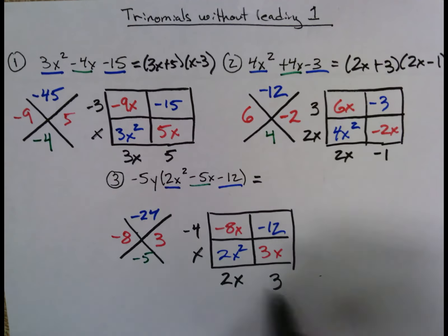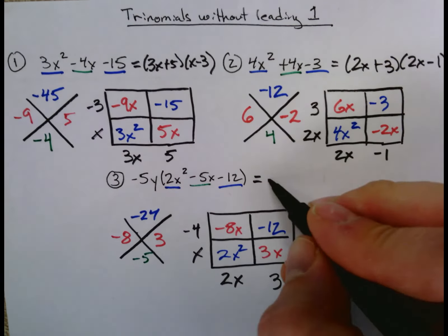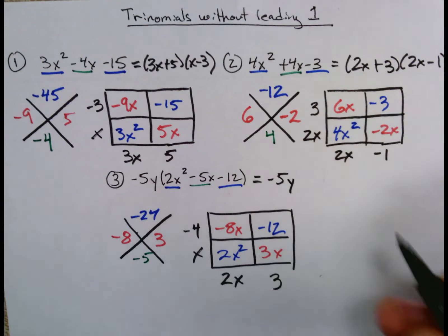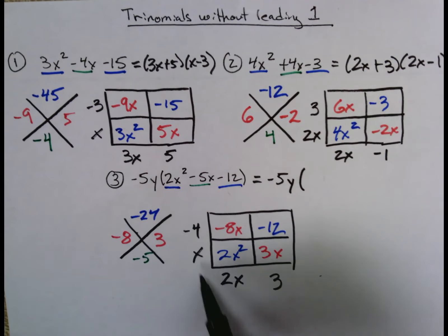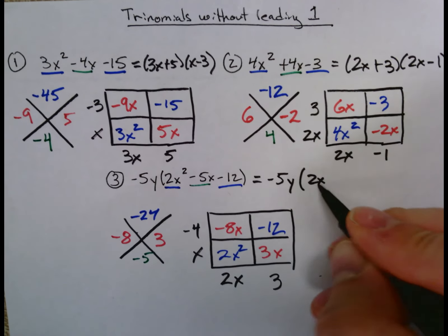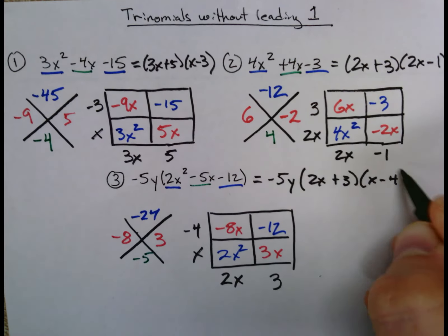And this has to be a +3 then. And so your final factored version of this expression, don't forget your greatest common factor out front, -5y first. And then you put your dimensions (2x + 3)(x - 4).